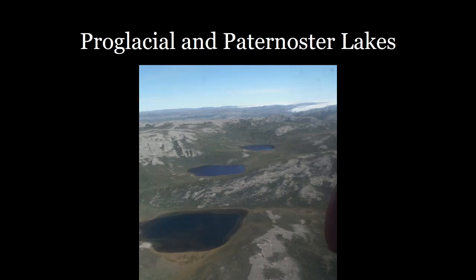For glaciers that end on land, instead of fjords we get lakes. Proglacial lakes are lakes that are in front of a glacier, but we can also have paraglacial lakes that are further away from the glacier in previously retreated glacial landscapes.